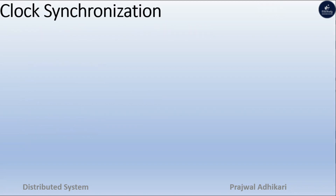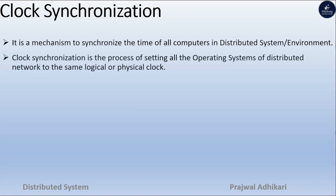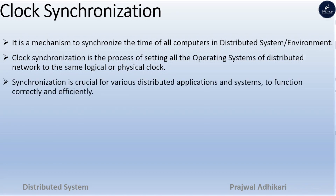So what is clock synchronization? Clock synchronization is a mechanism to synchronize the time of all computers in a distributed system or distributed environment. It is the process of setting all the operating systems of distributed networks to the same logical or physical clock. All systems should have the same type of clock, either logical or physical. Synchronization is crucial for various distributed applications and systems to function correctly and efficiently.